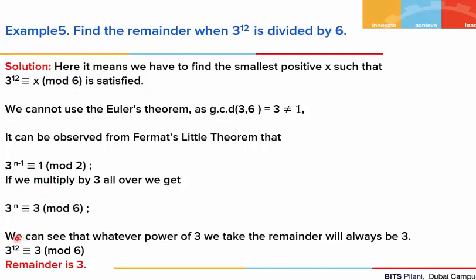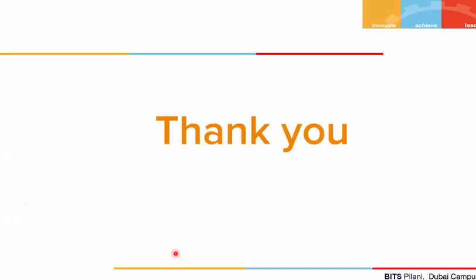We can see that for any value of n, the remainder will always remain 3. So in our case, where n is 12, from this statement, 3 to the power 12 will always be congruent to 3 mod 6. The remainder is always 3, whatever value of n you take. Thank you for watching.